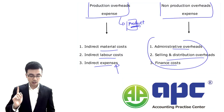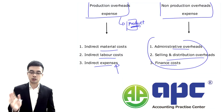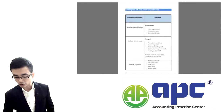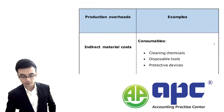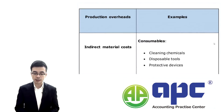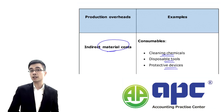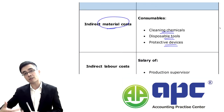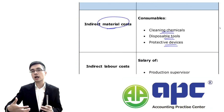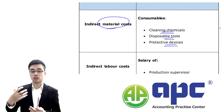Starting from the next page of the notes, I'll give lots of examples related to production and non-production overhead expenses. For production overheads, indirect material costs include cleaning chemicals, disposal tools, protective devices, and so on — costs not directly related to the increase in volume of material produced.